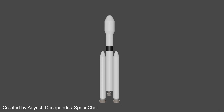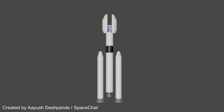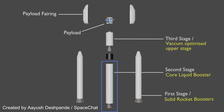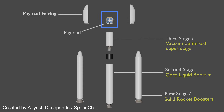An orbital rocket can have stages ranging from 2 to 5. Here, I've taken a simple 3-stage heavy launch vehicle to explain the stages. The two solid rocket boosters comprise the first stage. The middle core liquid booster is the second stage and it lights up after the first stage is separated. The third stage is a little smaller than the other two and comprises a vacuum optimized engine that puts the payload into its proper orbit. The satellite to be taken into orbit is called the payload. The payload fairing protects the satellite from atmospheric forces on ascent.